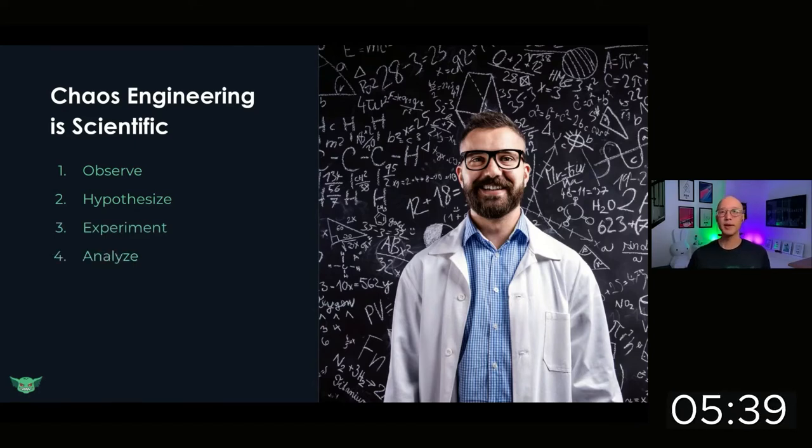The fourth part is to analyze the data. What did you learn? How can your system be improved? And importantly, what else could happen? What are the adjacent possibilities of failure that were made possible? How could they come together and collude to turn this failure that you injected into a major catastrophe?